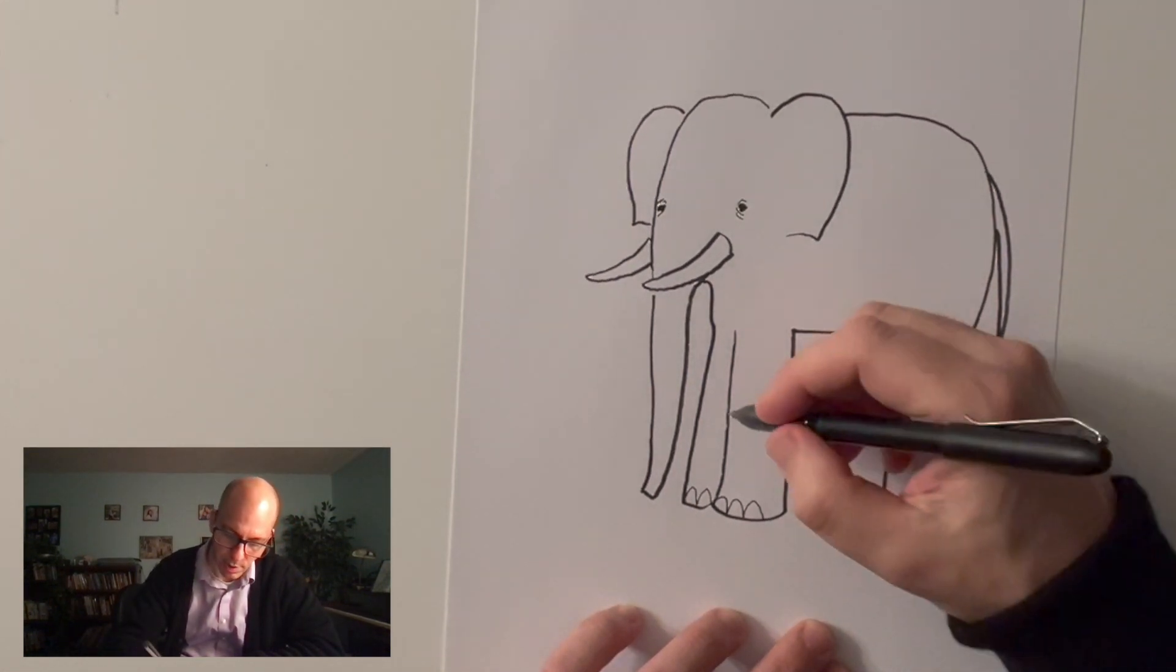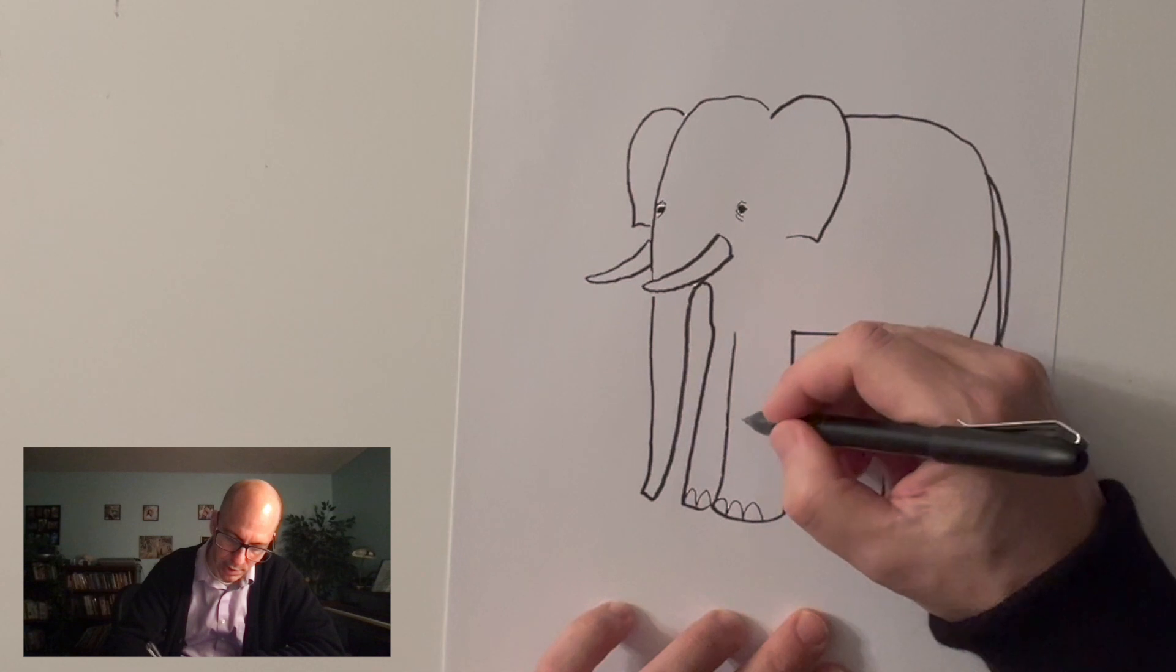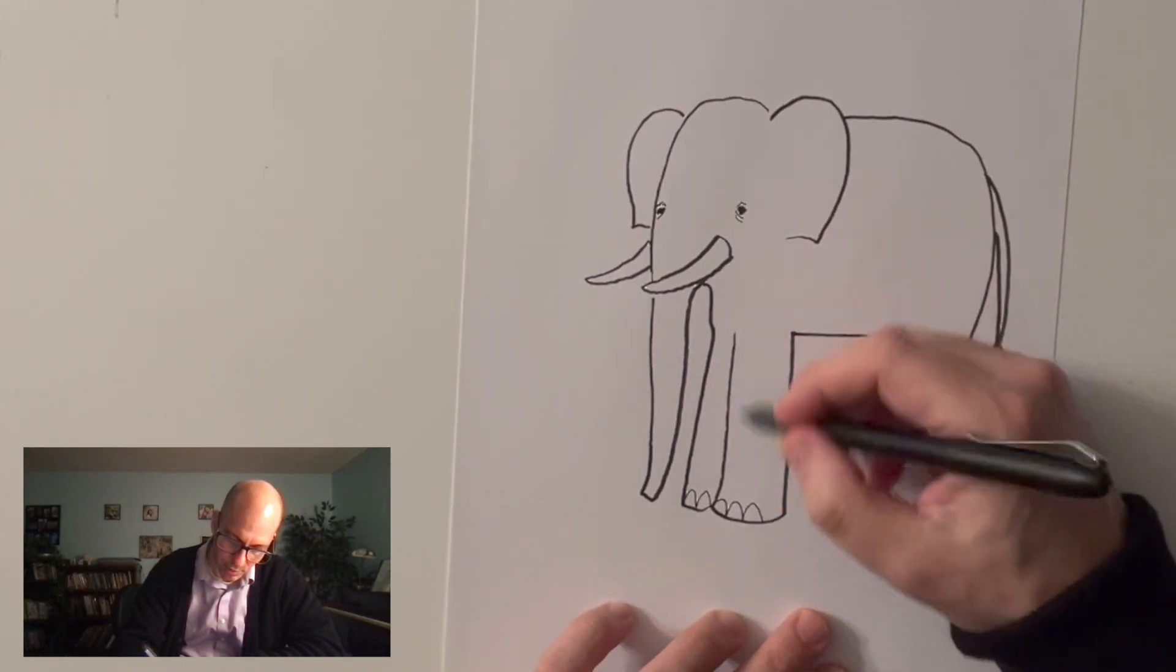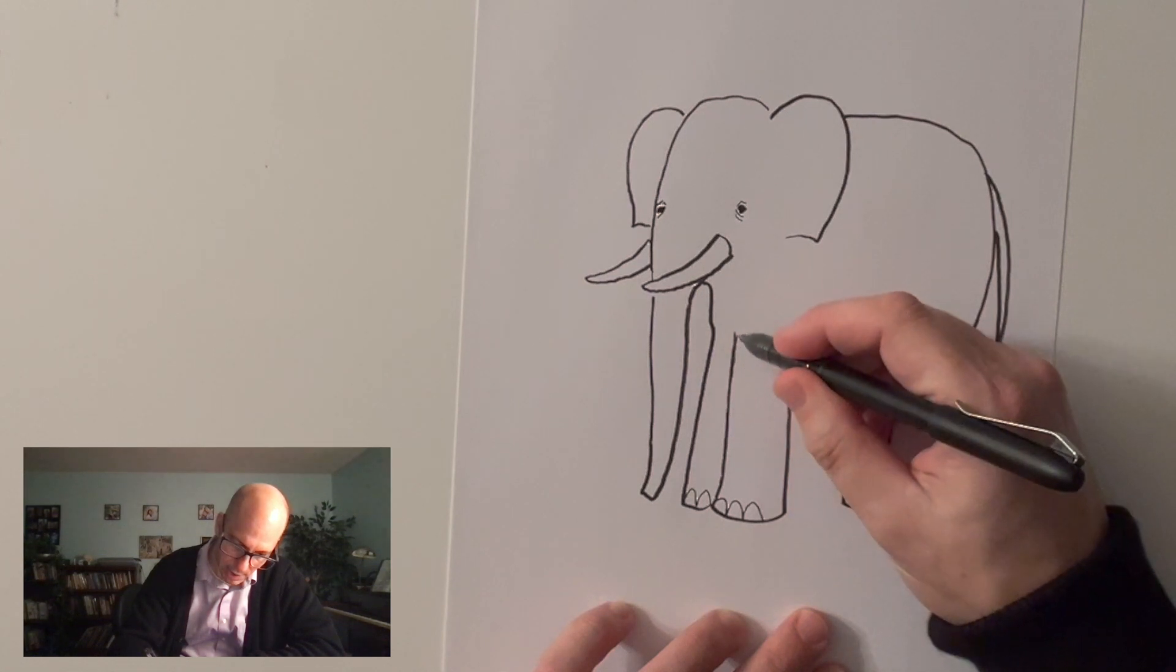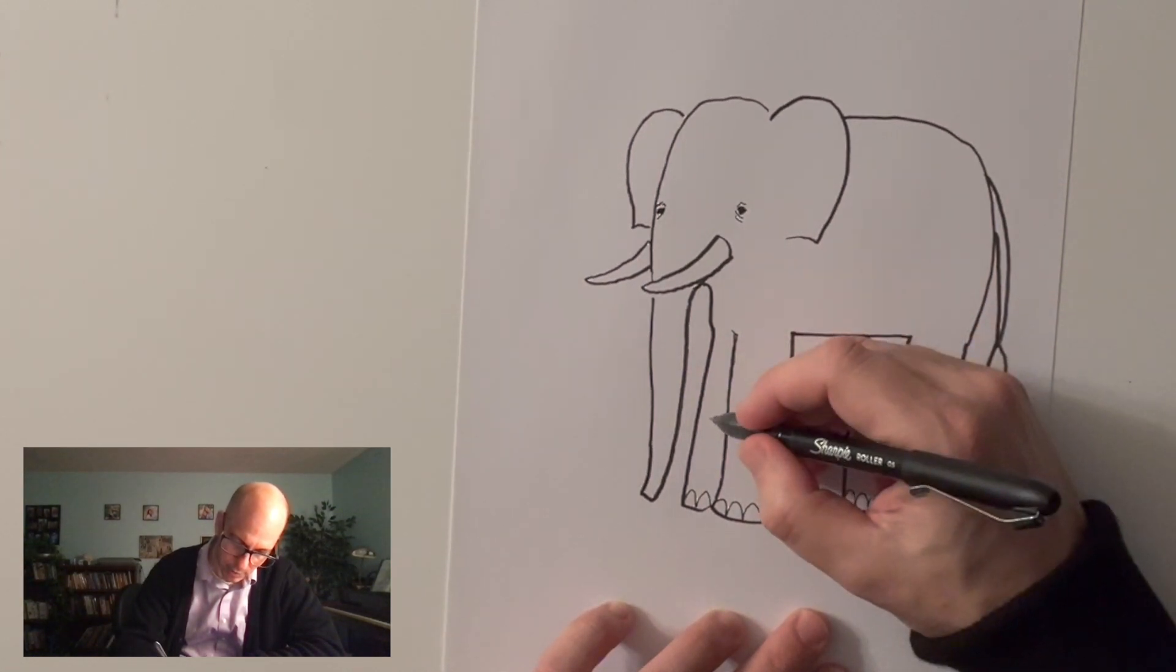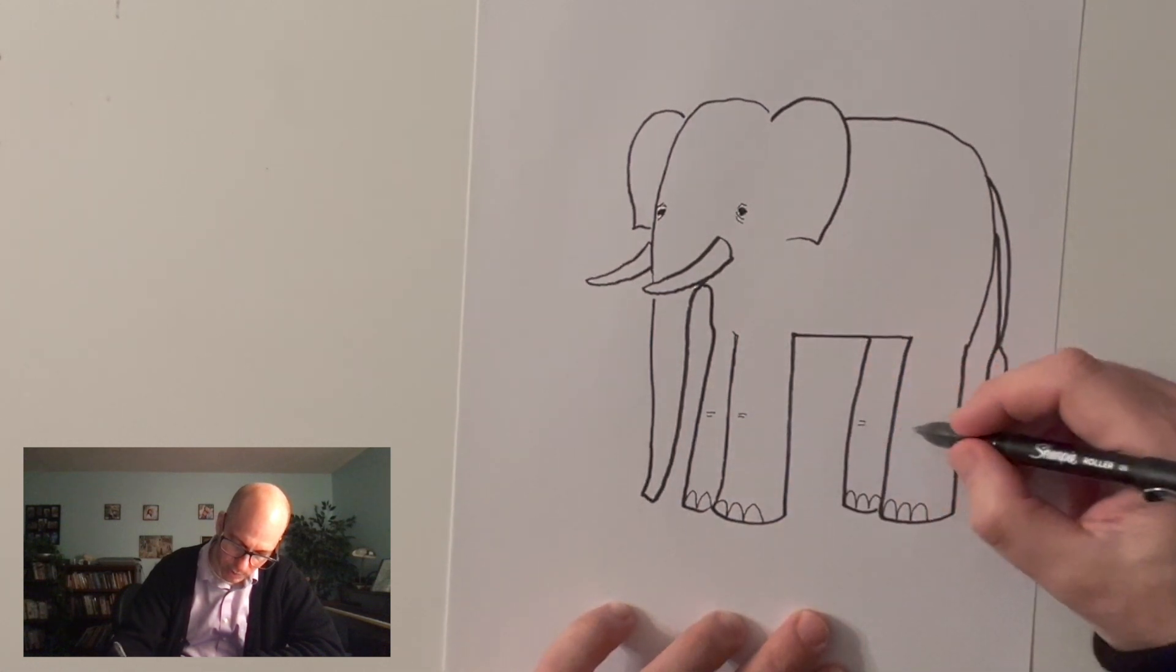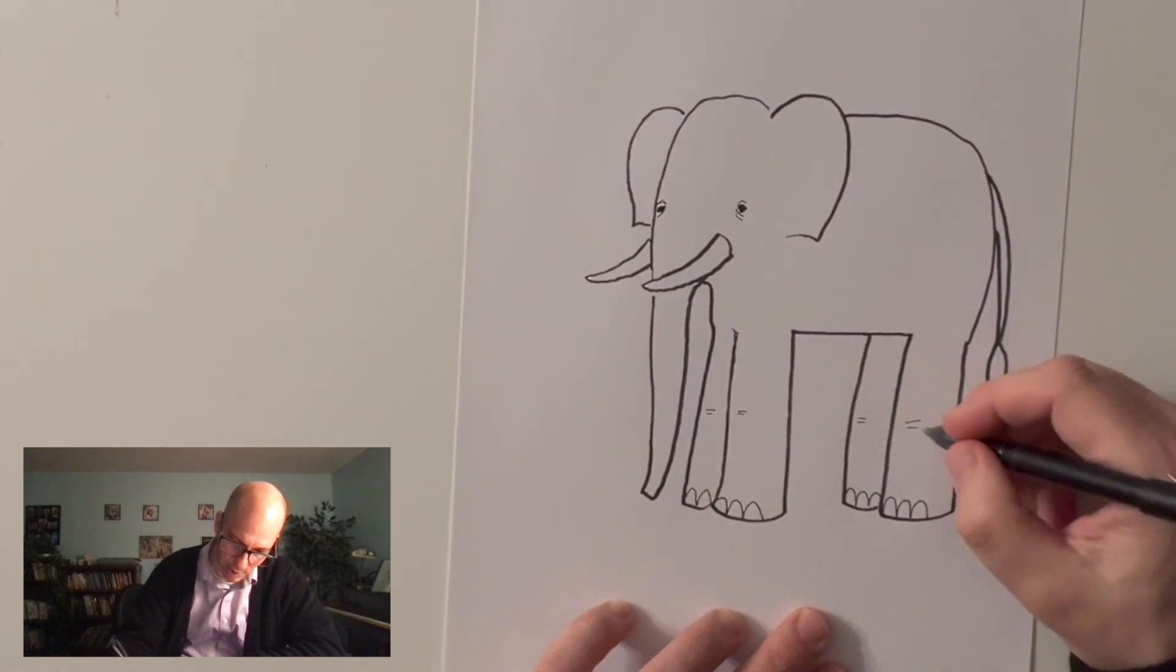Another thing that's really interesting about elephants is that their knees all bend the same way. They're one of the only animals with four legs that have knees that all go the same direction. So I'm just going to indicate that by drawing a couple wrinkles in here. And just say, there, those are my elephant's knee wrinkles.